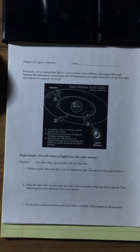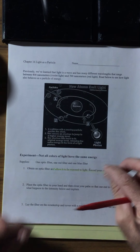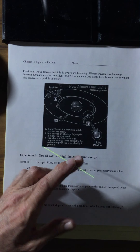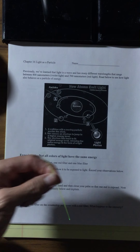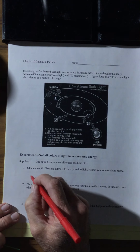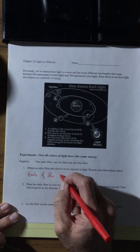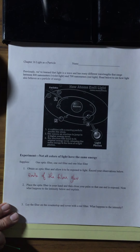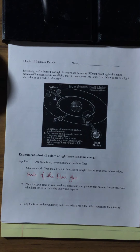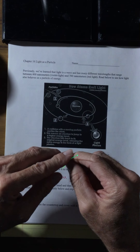We're going to go through each of these questions. We have an optic fiber — allow it to be exposed to light and record your observations. What you see is that both ends appear to glow. So the ends of the fiber glow. Now this says place the fiber in your hand and close the palm so that one end is exposed. Hopefully you're able to see the intensity of the light.